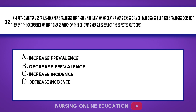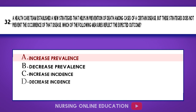Question 32. A healthcare team established new strategies that help in prevention of death among cases of a certain disease, but these strategies do not prevent the occurrence of that disease. Which of the following measures reflects the expected outcome? A. Increase prevalence. B. Decrease prevalence. C. Increase incidence. D. Decrease incidence. The answer is option A: Increase prevalence.